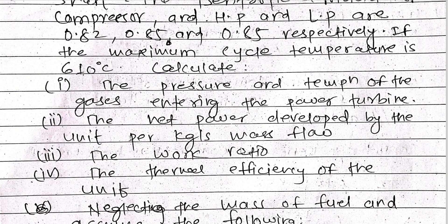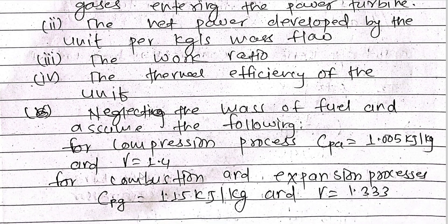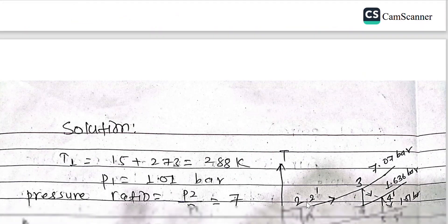Also calculate the net power developed by the unit per kg per second mass flow, the work ratio, and the thermal efficiency of the unit. Neglect the mass of fuel and assume: for the compression process, Cp = 1.005 kJ/kg·K and gamma = 1.4; for combustion and expansion processes, Cp = 1.15 kJ/kg·K and gamma = 1.333.